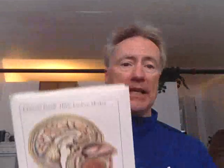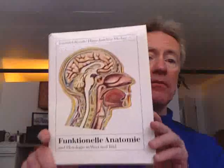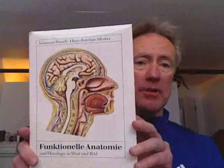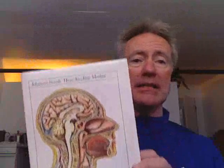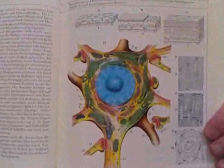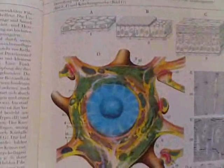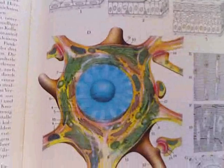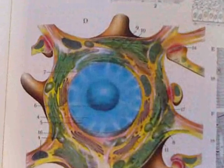I'd like to thank the publishers again of Funktionella Anatomie, which was published in Berlin in 1990. This is the presentation of the nerve cell. This is a wonderful piece of artwork and I will bring it in slowly, because this is very well done.